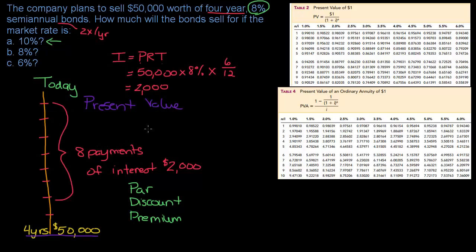What I need to figure out is: what is $50,000 in four years worth today? That is called present value — what is the present value of $50,000 in four years? With a bond, I'm not just receiving the $50,000; I'm also receiving eight payments of $2,000. A series of payments like that is called an annuity.